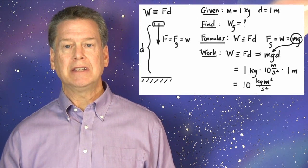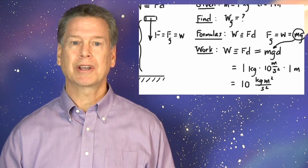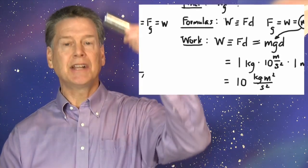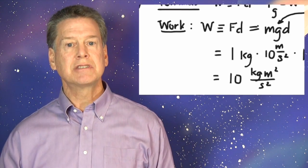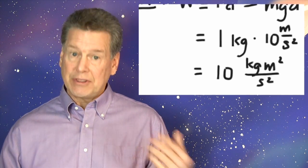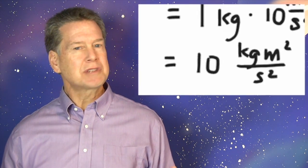Evidently, the force of gravity did 10 units of work on the kilogram as the kilogram fell through a distance of 1 meter. That's the answer! But what are those complicated units?